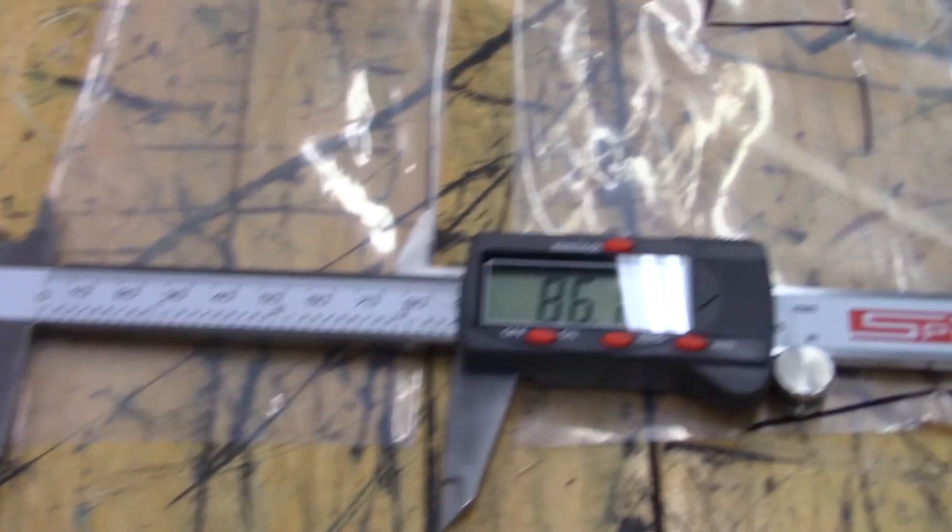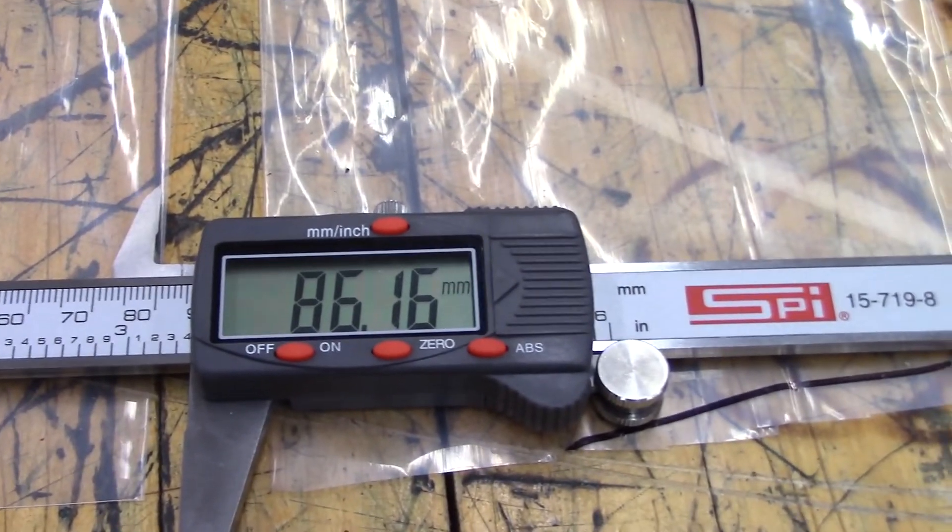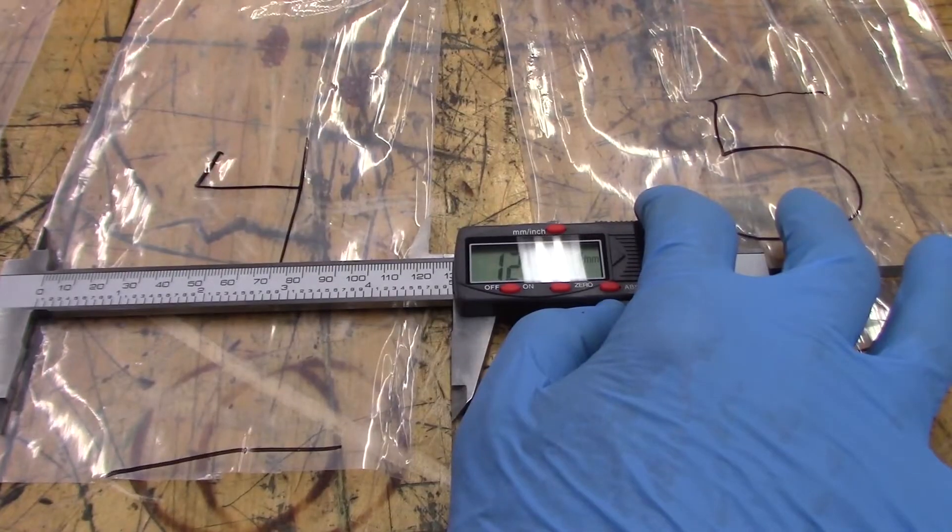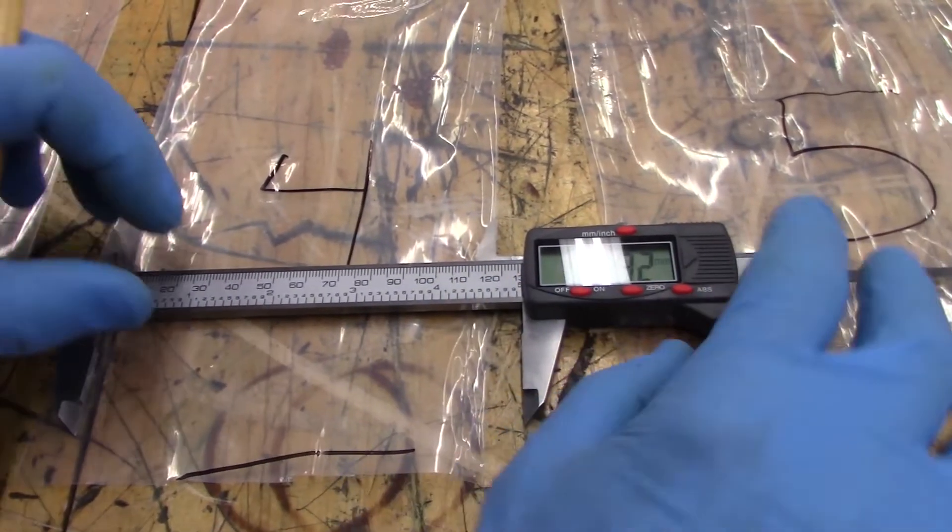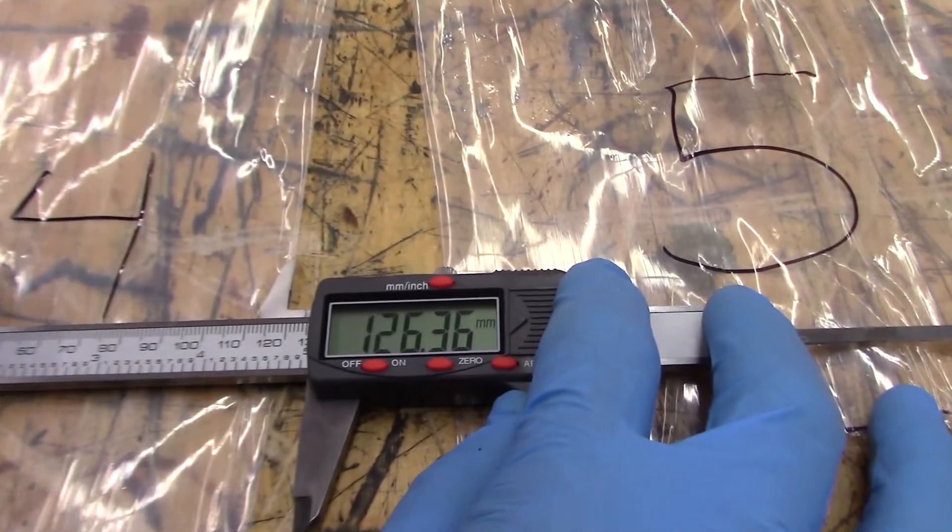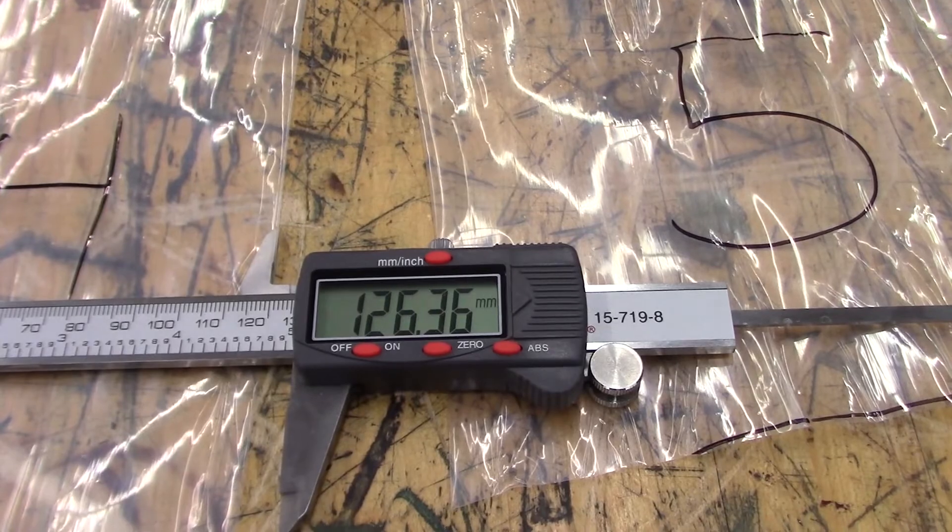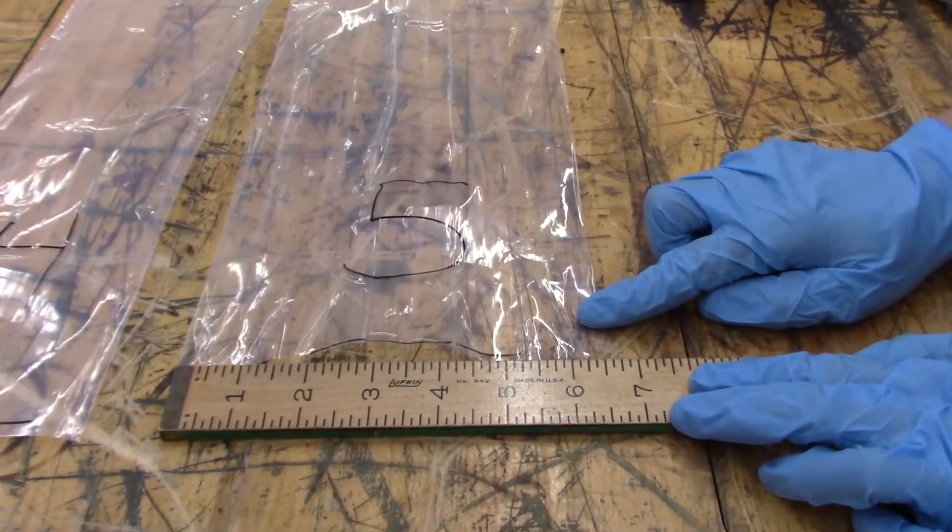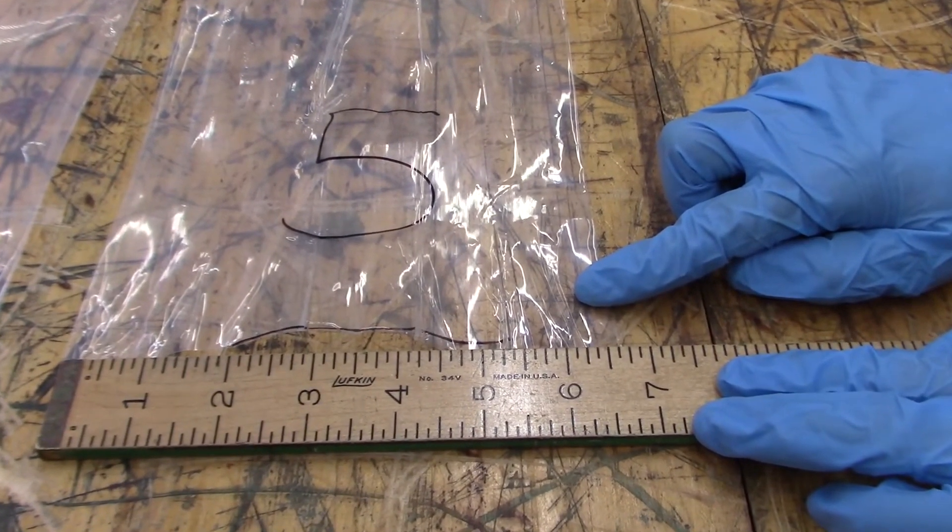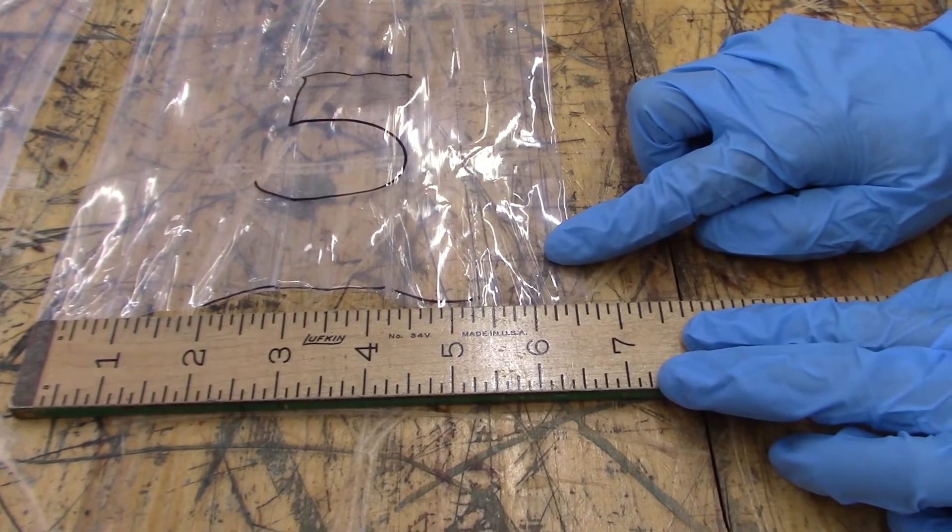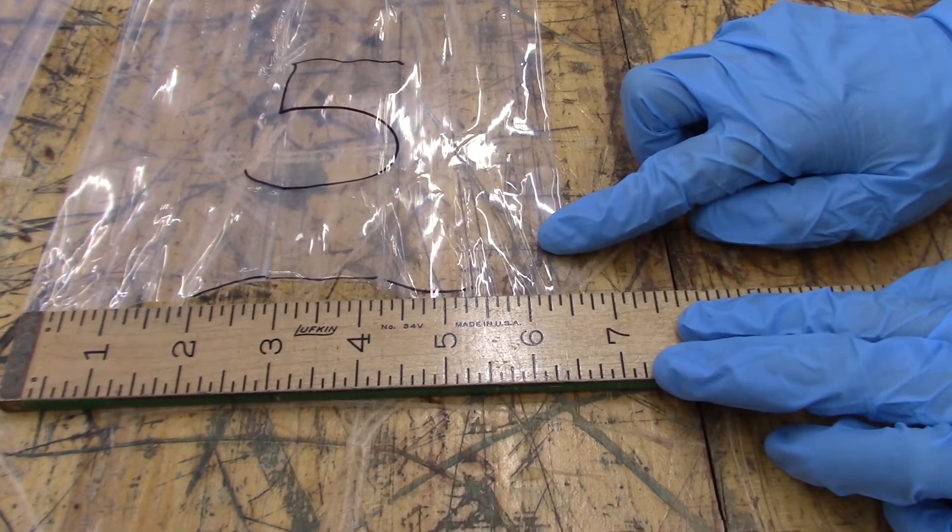Sample 3 has a diameter of 86.16 millimeters. Sample 4 is 126.36 millimeters.